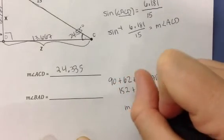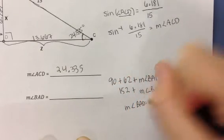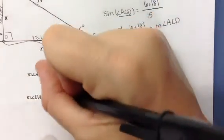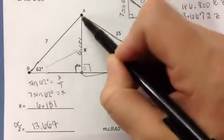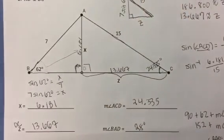So the measure of angle BAD must equal 28 degrees. And again, you could check that because 62 plus 28 plus 90 is 180.